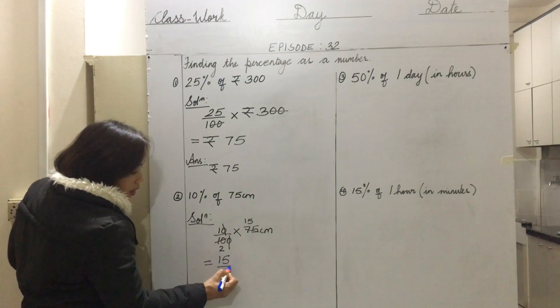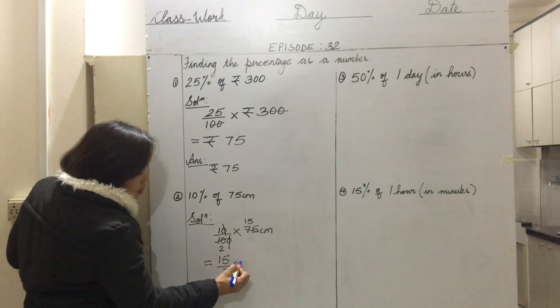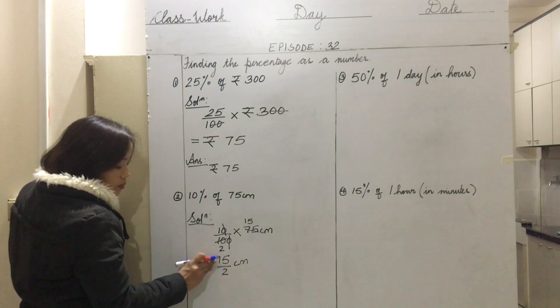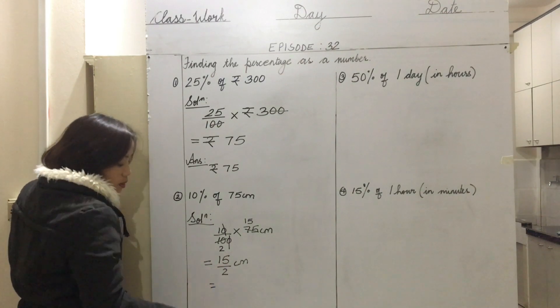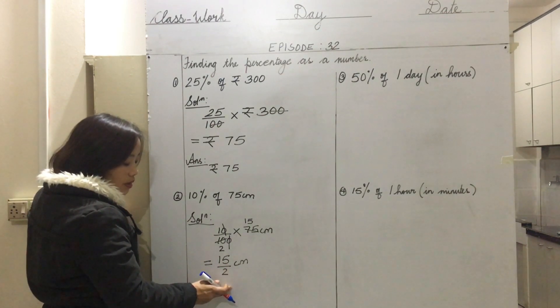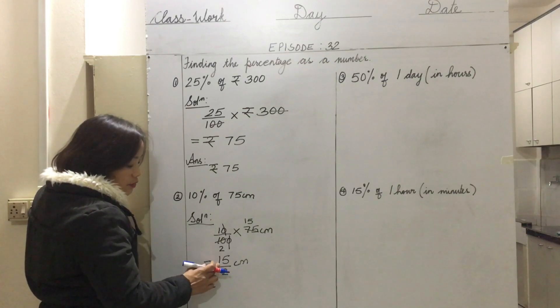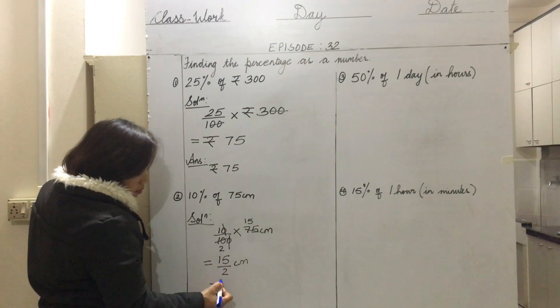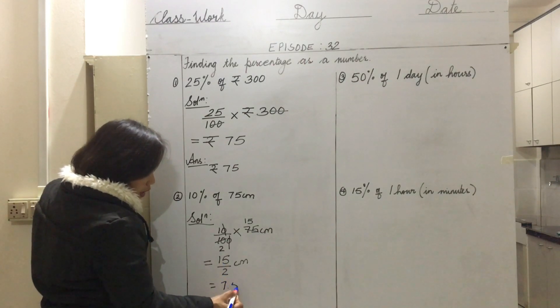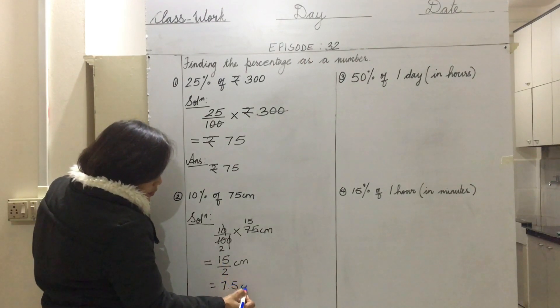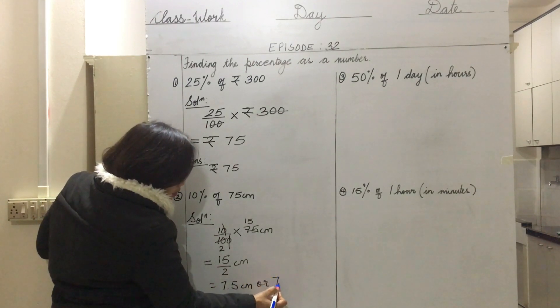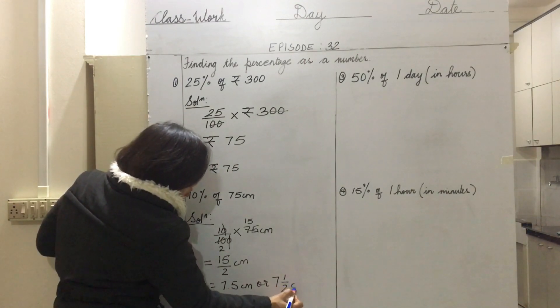When numerator and denominator cannot be divided fully, then we need to express our answer either in decimal or in mixed fraction. 15 by 2: when we divide 15 by 2 we get 7.5 centimeter, or you can write 7 and 1 by 2 centimeters.